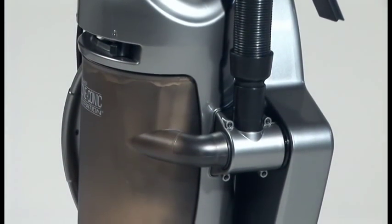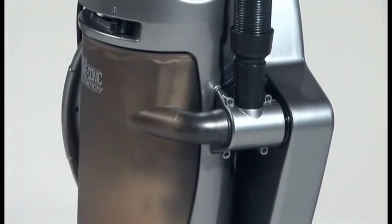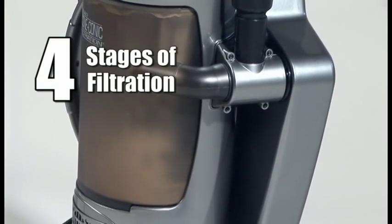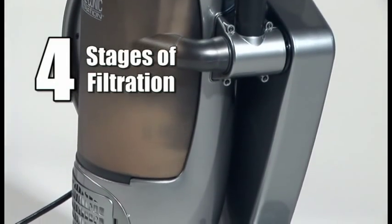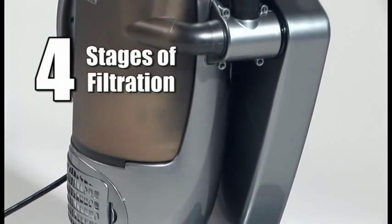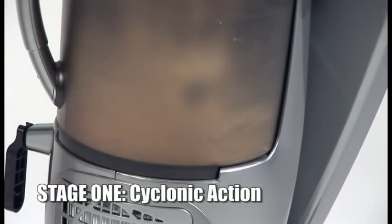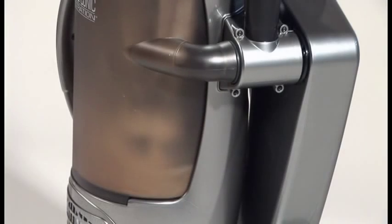As air, dirt, and debris are pulled through the Filtropure, it passes through four stages of filtration. You can see the first stage right here through the canister. Cyclonic action forces air, dirt, and debris to the outside of the canister and at the same time air cleans the filter cone, keeping it unplugged and unblocked so you're never at a loss for cleaning power.